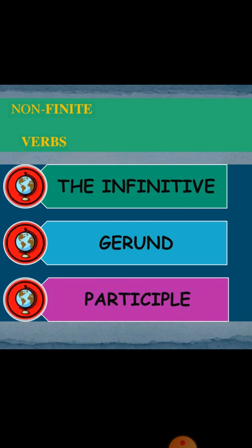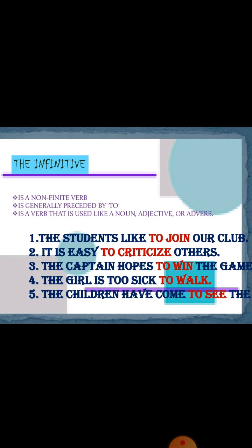A non-finite verb can be the infinitive, gerund, and participle. Infinitive means 'to.' After 'to,' when we apply the first form of the verb in a sentence, it does not have any concern with the subject. It can appear in past, present, and future tense.